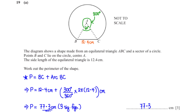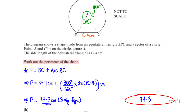The diagram shows a shape made from an equilateral triangle ABC and a sector of a circle, with B and C on the circle centre A. The side length is 12.4 cm. The perimeter equals BC plus arc DC. BC is 12.4 cm. The arc DC uses angle 300 degrees: arc length equals (300/360) times 2π times 12.4, giving 77.3 cm to three significant figures.